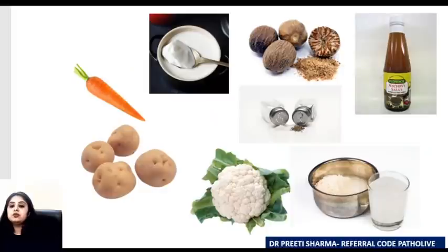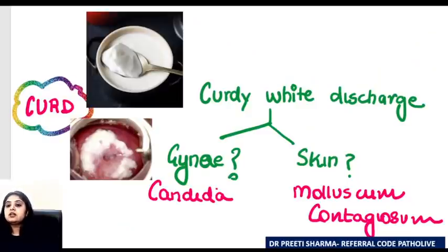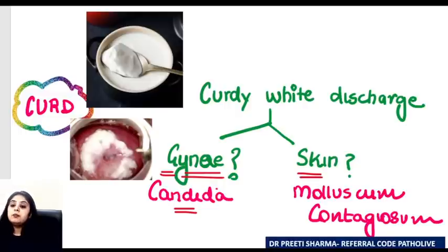Now let's move to vegetables and lunch-related food similarities. First, a curdy or creamy white discharge seen on the cervix is indicative of candidal infection — you do a pap smear and document the presence of Candida. Similarly, when a curdy white discharge comes from a skin lesion, you call it molluscum contagiosum.